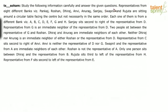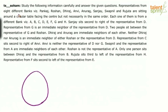Study the following information carefully and answer the questions. Representatives from eight different banks — Pankaj, Roshan, Dheeraj, Anvi, Anurag, Sanjay, Swapnil, and Rujuta — are sitting around a circular table facing the center, not necessarily in the same order. Each one is from a different bank: A, B, C, D, E, F, G, and H. Since all are facing the center, left is clockwise and right is anticlockwise. We expect at best two cases.